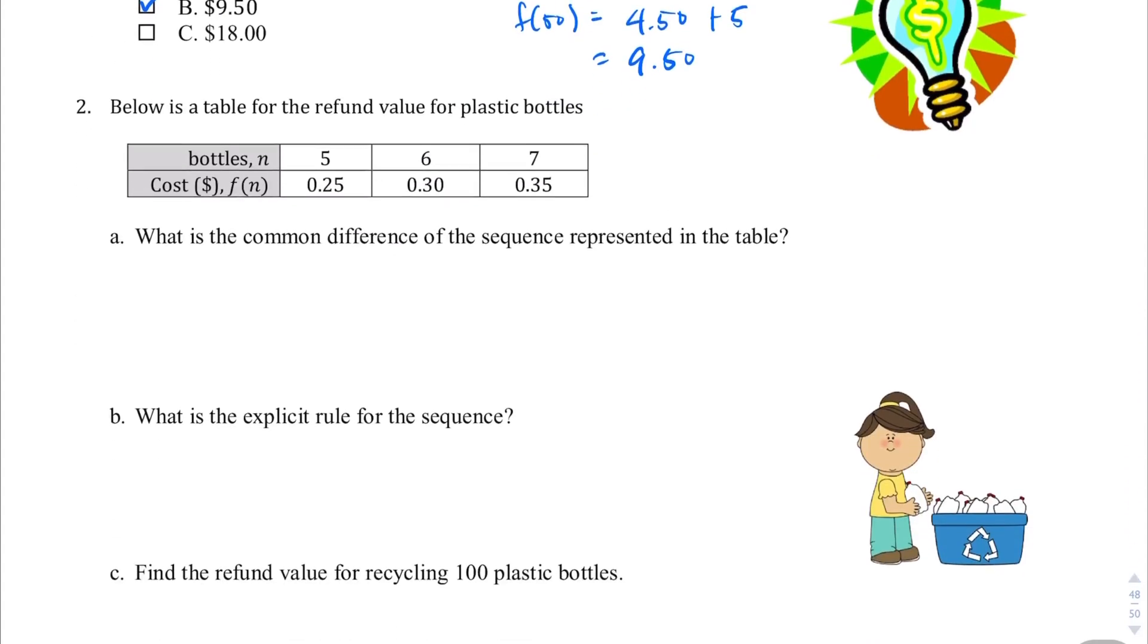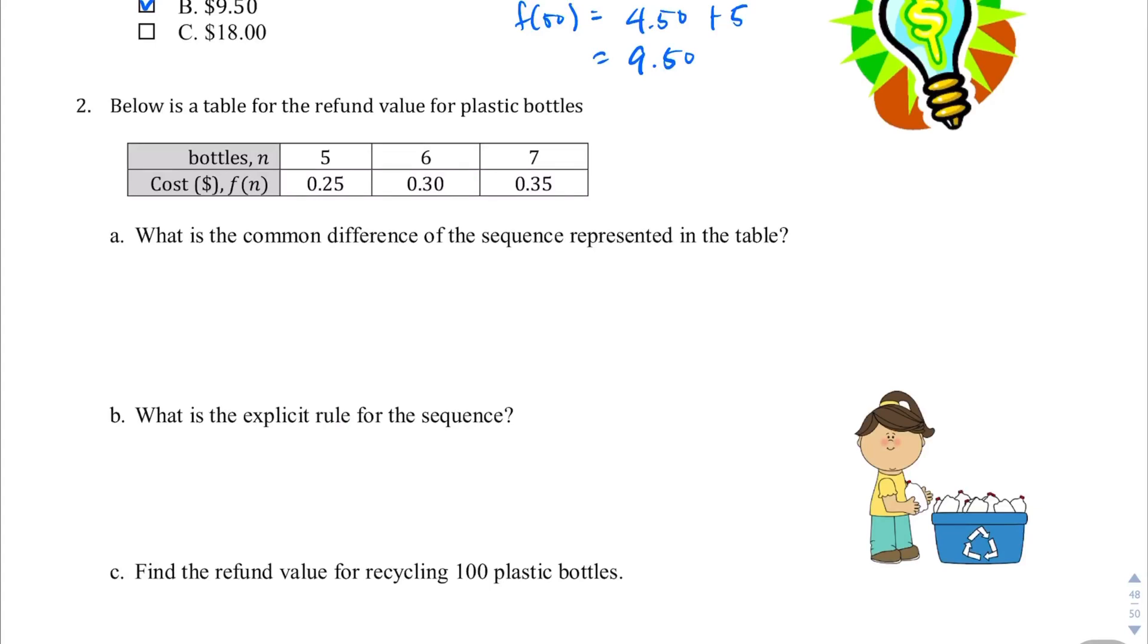Question number 2. Below is a table for the refund value for plastic bottles. We're starting at 5. We want to get all the way down to 1. The common difference there, from 25 to 30, the common difference is going to be an increase of 5 cents. So we're increasing by 0.05 cents. The common difference is 0.05.